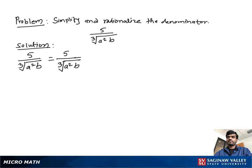to have three factors of a and three factors of b. But as we see, we have two factors of a and one factor of b, and we still need one more factor of a and two more factors of b.